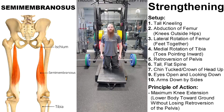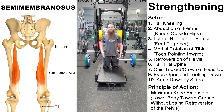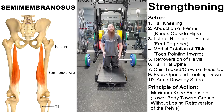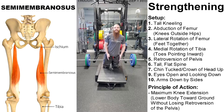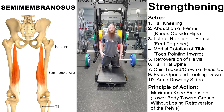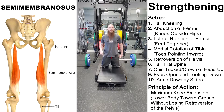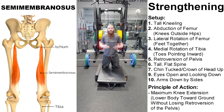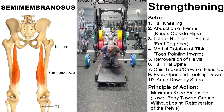We can do a strengthening exercise for the semimembranosus muscle — a variation of the Nordic curl. The Nordic curl is going to emphasize the proximal fibers, meaning the fibers closest to the pelvis. To target the semimembranosus, we want to go into abduction of the femur by placing the knees outside of the hips, lateral rotation of the femur by bringing the heels toward each other, and medial rotation of the tibia by pointing the toes in toward each other.